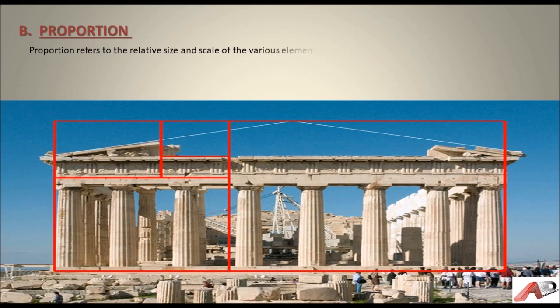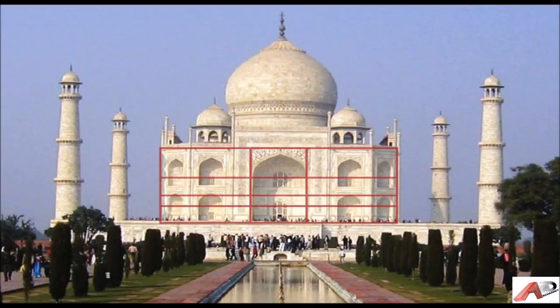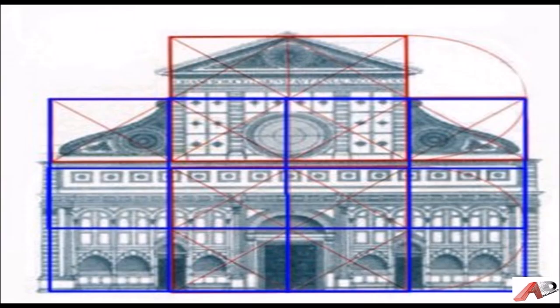Proportion refers to the relative size and scale of the various elements in a design. The issue is the relationship between objects or parts of a whole. It is necessary to discuss proportion in terms of context or standard used to determine proportions. The Taj Mahal is also based on proportions, as are the cathedrals in Italy and Florence.